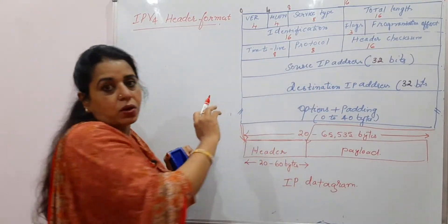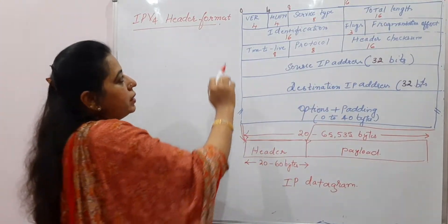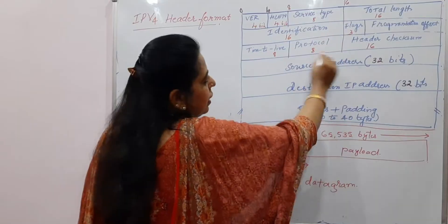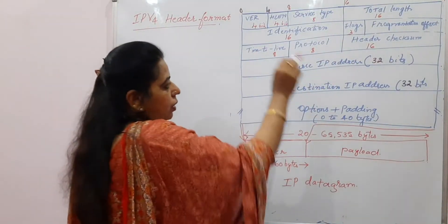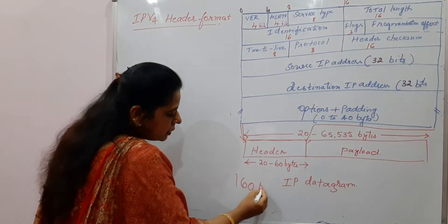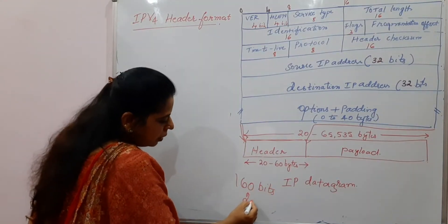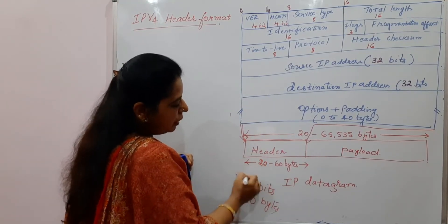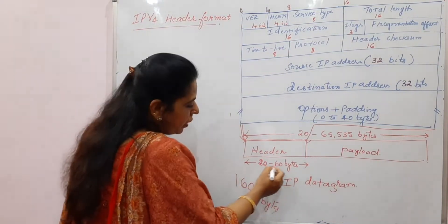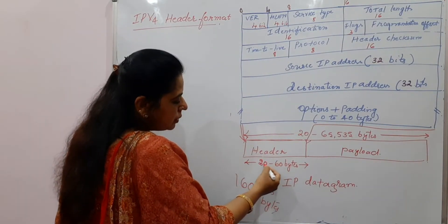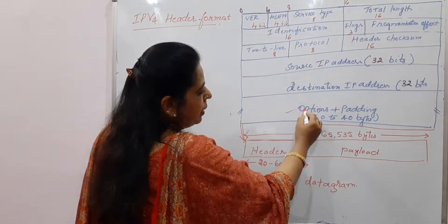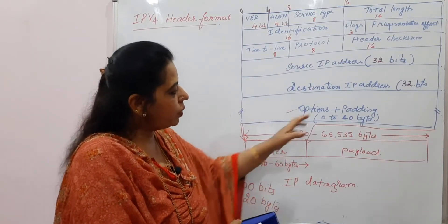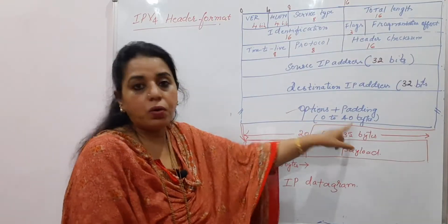There are 12 fields here. Each field has some bits reserved. The very first field has 4 bits, the next also has 4 bits, and so on — I have written the number of bits meant for each field. In total, if you add them all up, it becomes 160 bits, which equals 20 bytes. That is why the header should be a minimum of 20 bytes and a maximum of 60 bytes. The remaining 40 bytes can be included from the options part, which may or may not be present in every packet — so options range from 0 to 40 bytes.